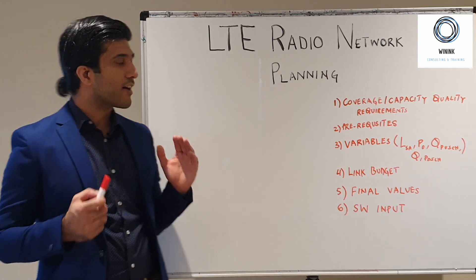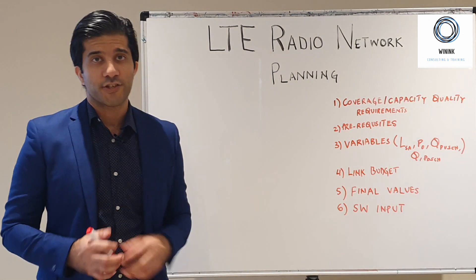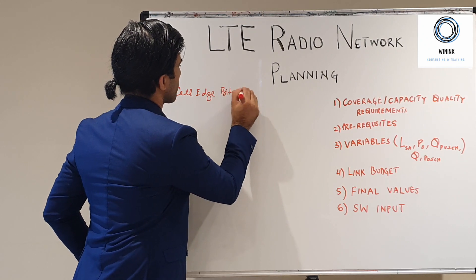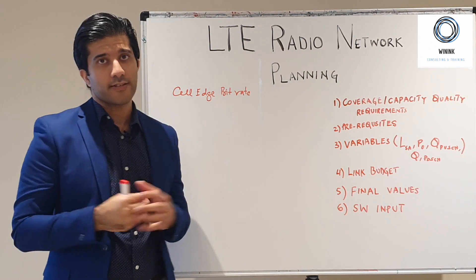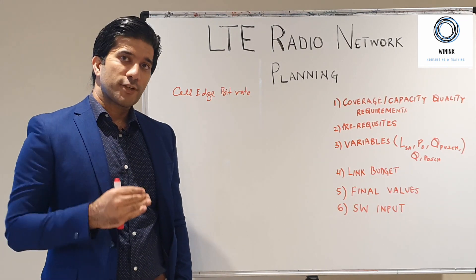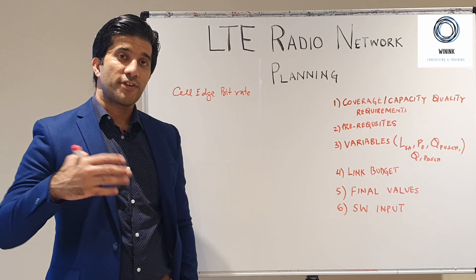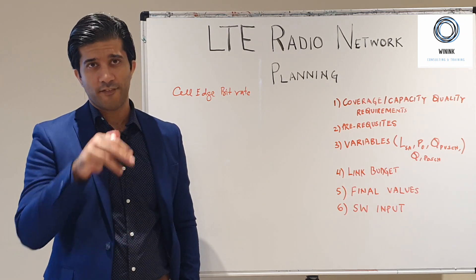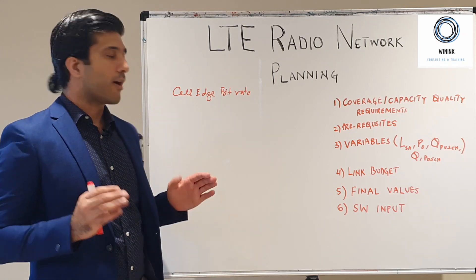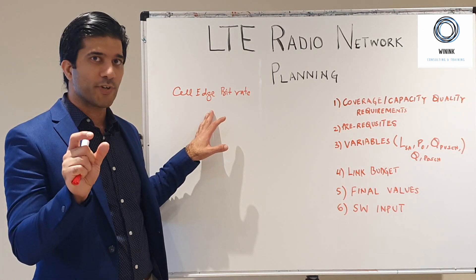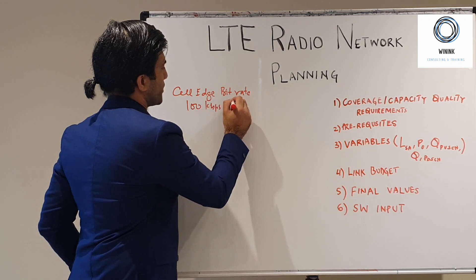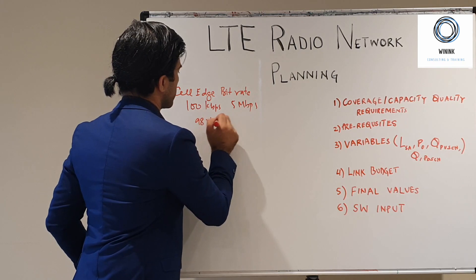The first point is your coverage and capacity quality requirements. In terms of coverage, we define a cell edge bit rate — the bit rate achievable at the cell edge with a particular coverage probability. For example, you may want to achieve 100 kbps or 5 Mbps at 98% coverage probability. The relationship between coverage probability and radio network planning parameters is explained in a linked video, but this cell edge bit rate requirement is what you will use to design your network, for both uplink and downlink.